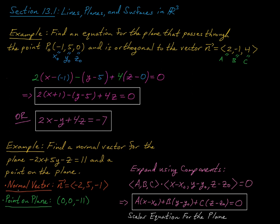Of course there are infinitely many points on the plane. Setting y and z to 0 gives x = −11/2, and setting x and z to 0 gives y = 11/5. These are just a couple of points on the plane. This is a good place to pause, and we'll pick up with more in the next video. Thank you so much.